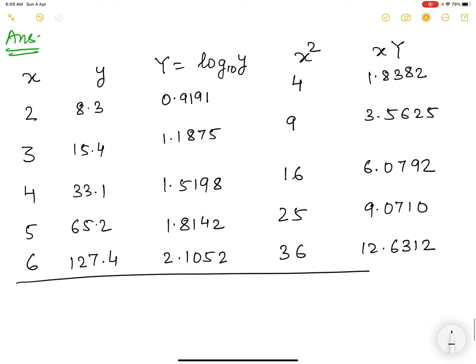Now let us take the summation. If we take the summation, we will get sigma x equals 20 which we need. Now sigma capital Y equals 7.5458. We will find sigma x square which equals 90. And now sigma x capital Y which is coming out to be 33.1821.